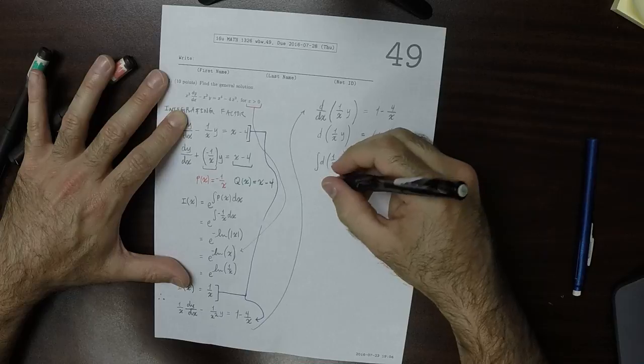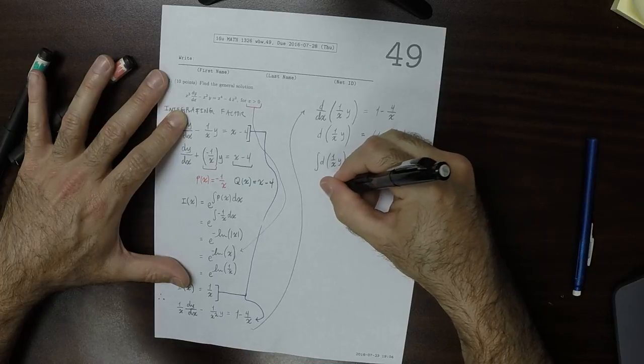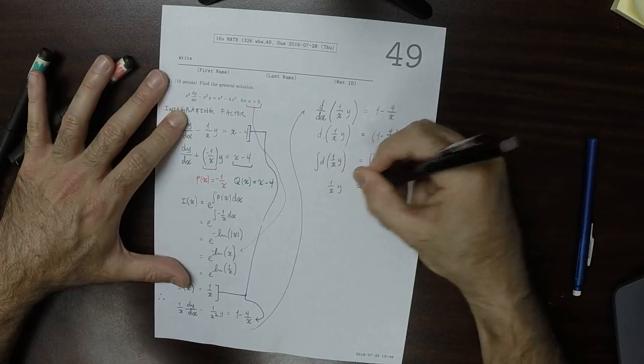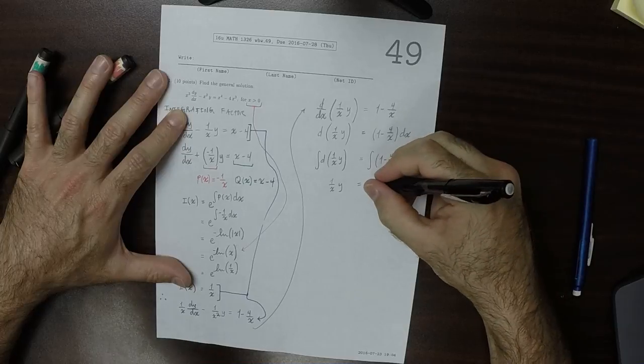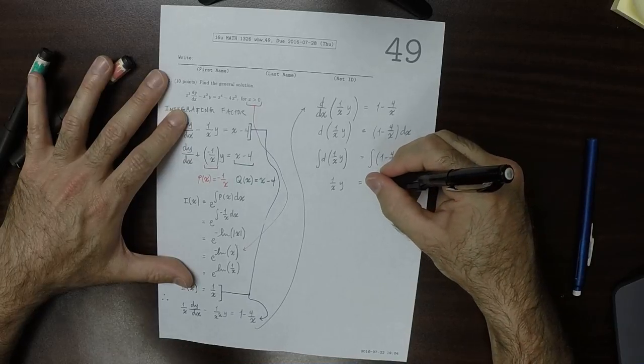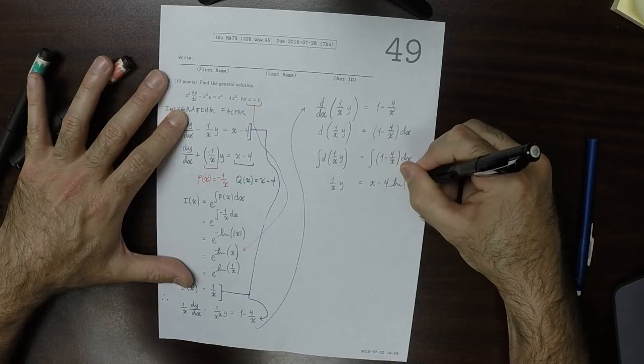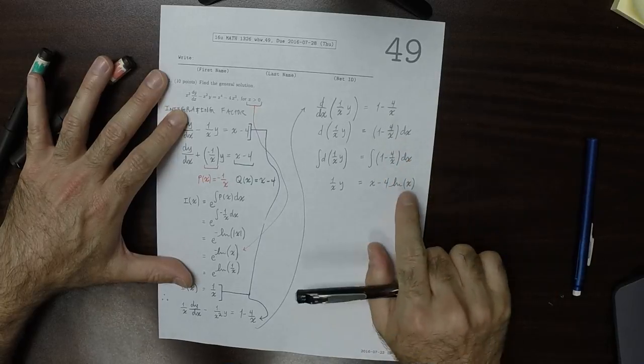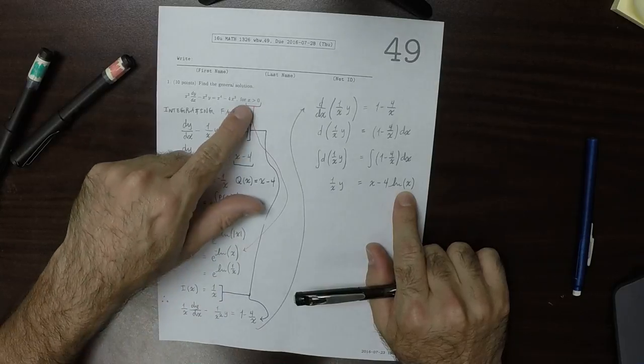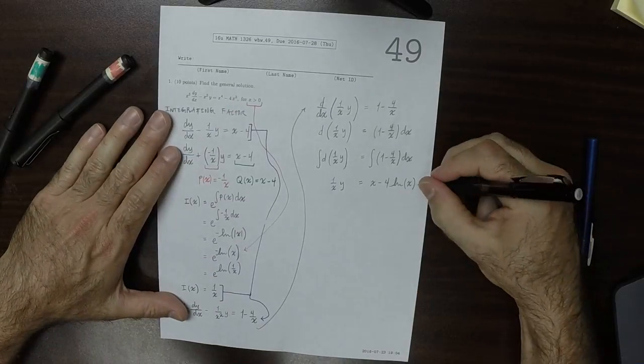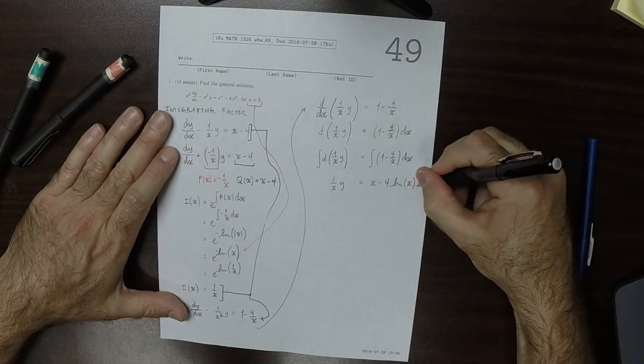So the left-hand side is easy. It's 1 over x y. The right-hand side is a little bit more interesting. So that would be x minus 4 log just x. Because again, I'm not using the absolute value because x is positive. And then plus a constant.